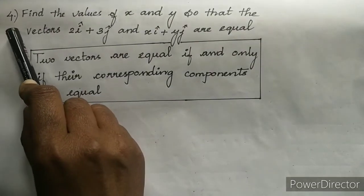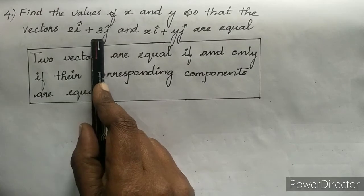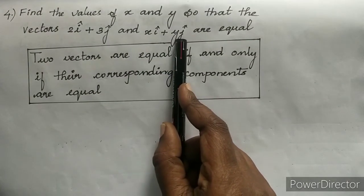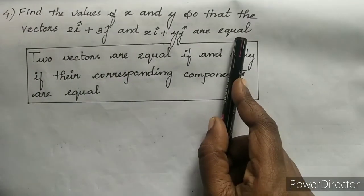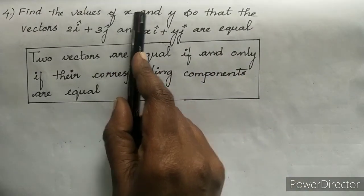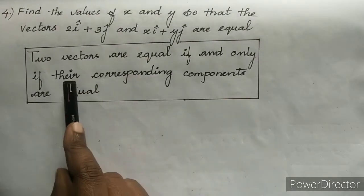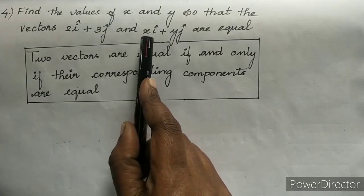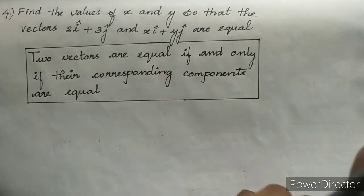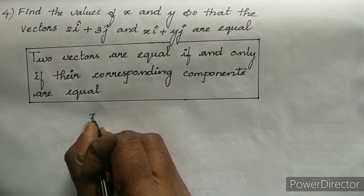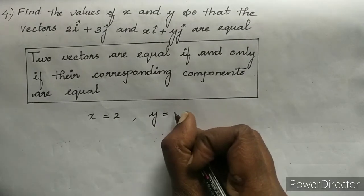Question number 4: find the values of X and Y so that the vectors 2 I cap + 3 J cap and X I cap + Y J cap are equal. Here we are given two vectors and told they are equal; we are asked to find the values of X and Y. We already know that two vectors are equal if and only if their corresponding components are equal. The corresponding components are X and 2, and Y and 3. So the value of X will be 2 and the value of Y will be 3.